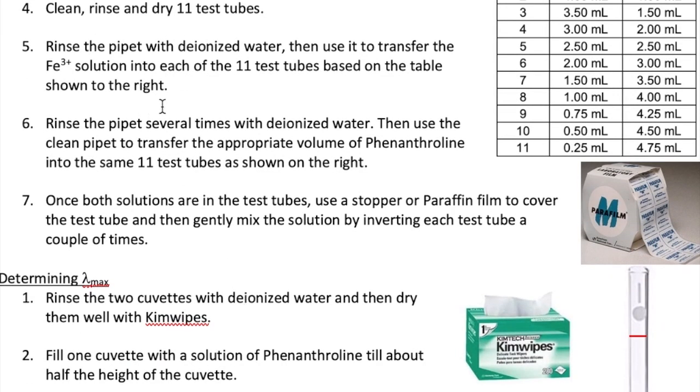Once you have the pipette, rinse it with water by pipetting deionized water and then discarding it into the sink. Do this twice. Pipette the correct volume of Iron solution into each of the tubes as given in the table in your lab procedure, which is also shown here. When you're done with all 11 test tubes, rinse the inside of your pipette with deionized water three times. Then use the pipette to transfer the correct volume of Phenanthroline into the 11 test tubes, which is also shown here and in your lab procedure.